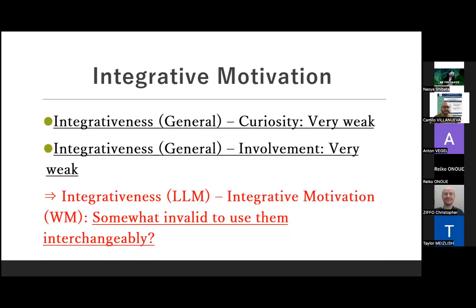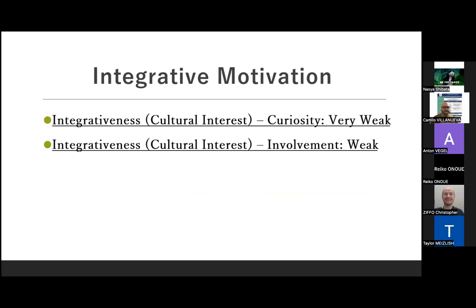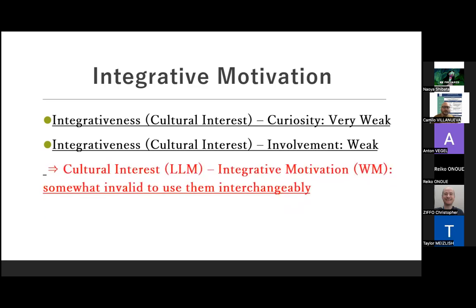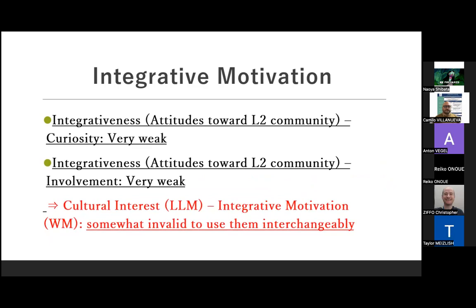Regarding integrativeness, generally speaking a very weak correlation was detected, so it's still risky to use them interchangeably. For travel orientation and curiosity, there was no correlation, and for travel orientation and involvement there was only a very weak correlation — again invalid to use them interchangeably. For cultural interest and involvement, although there are some weak correlations, it's still somewhat invalid to use these two variables interchangeably.